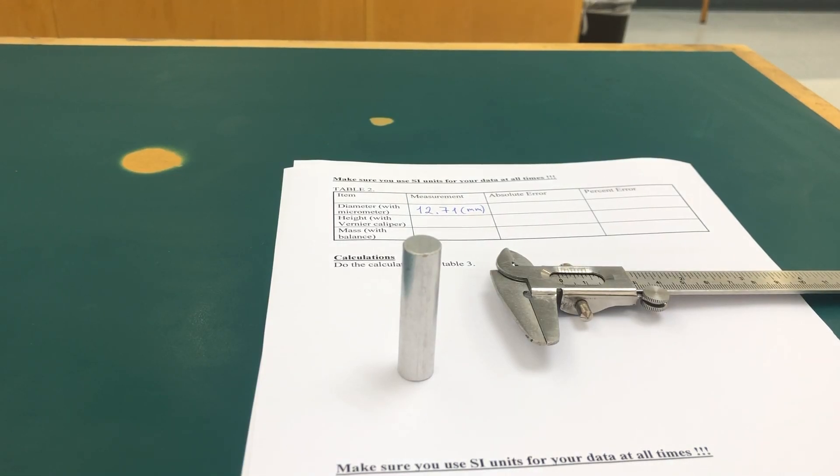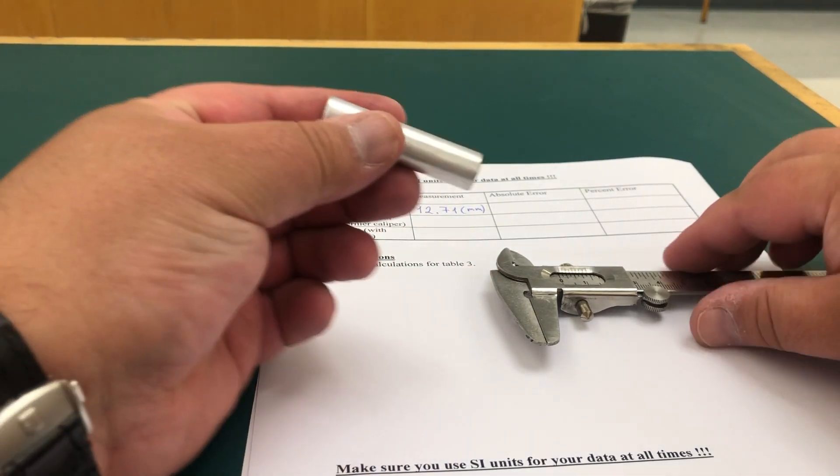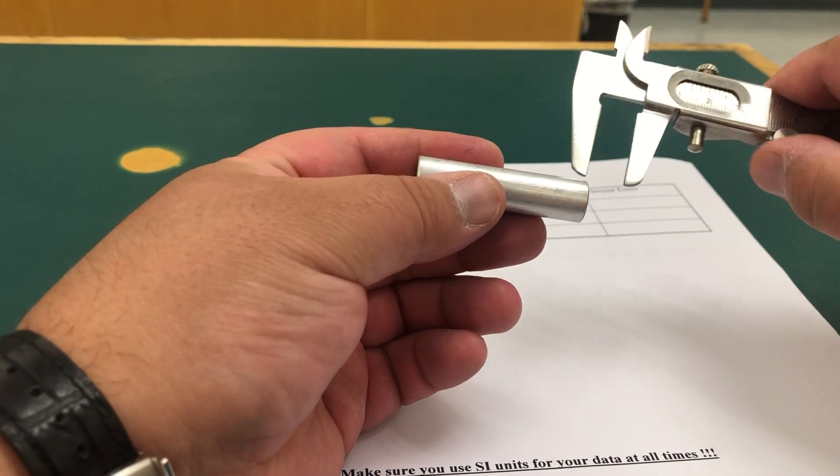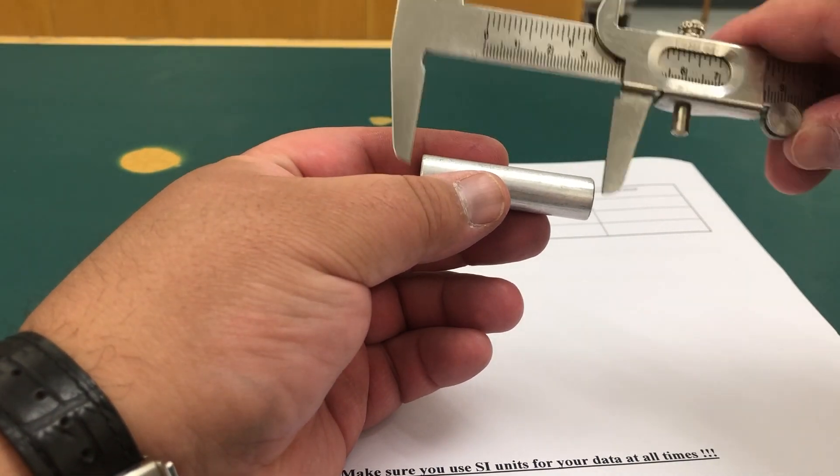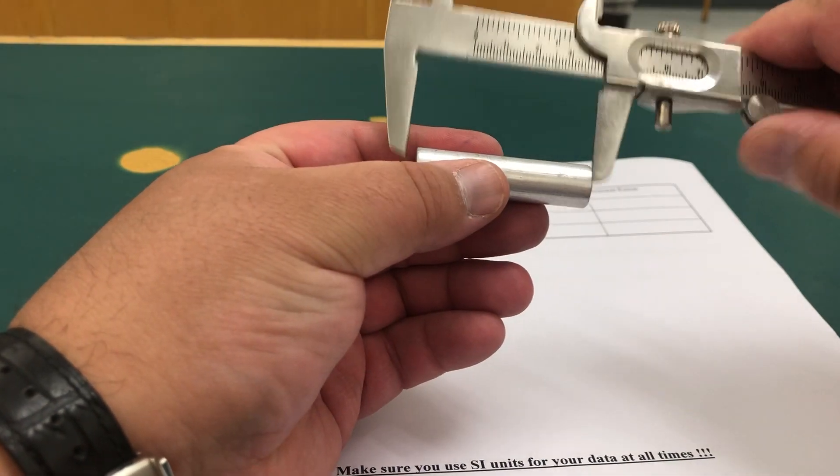Now let's measure the height of the aluminum cylinder with vernier caliper. That's the same cylinder that we used for micrometer measurement. Vernier caliper.